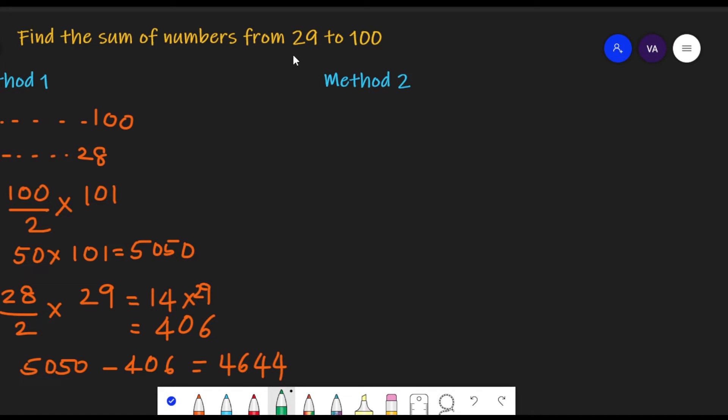Here, we can see the numbers are starting from 29. So our first number is 29. Our last number is 100. And what are the total numbers? Total numbers are 100 minus 28, because first 28 numbers we are not considering. So there are total 72 numbers. So here we have formula as n by 2, number of pairs, into sum of the first number and the last number.